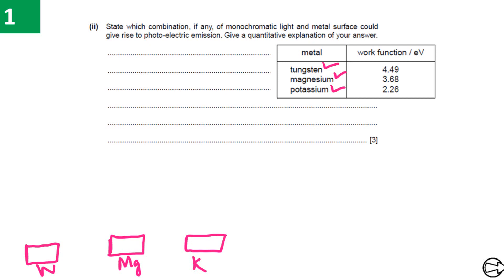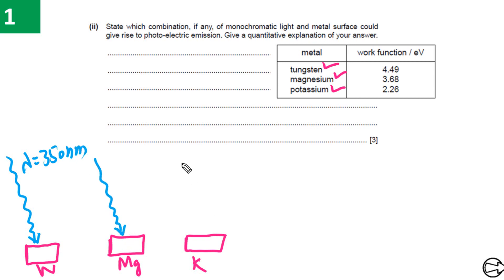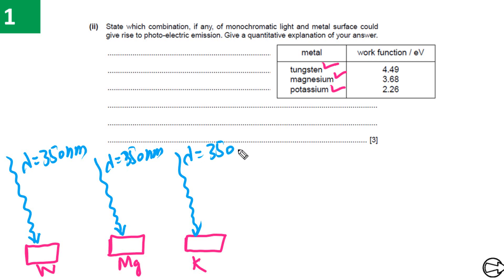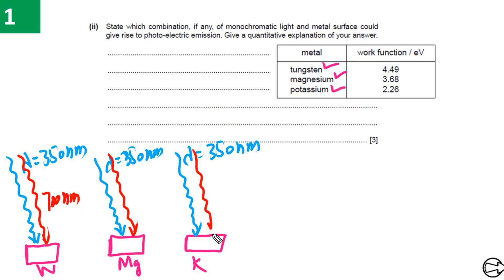We also have two different types of light. The first light has a wavelength of 350 nanometers, which is shone on all three metals. The second light has a wavelength of 700 nanometers, and it is also shone on all three metals.